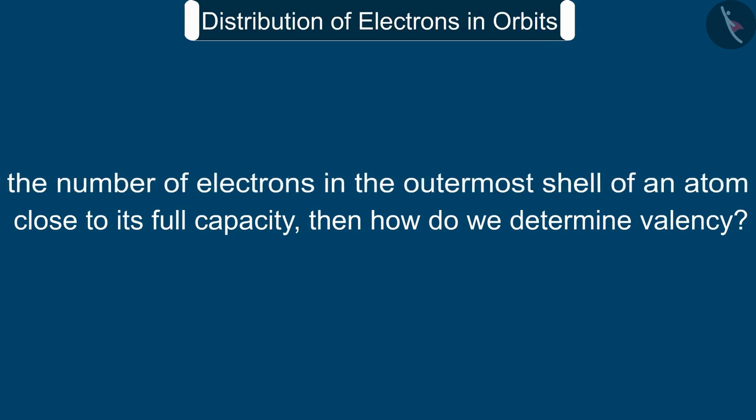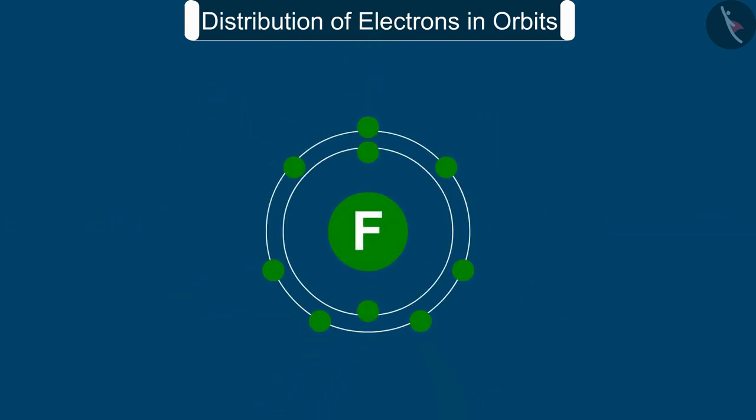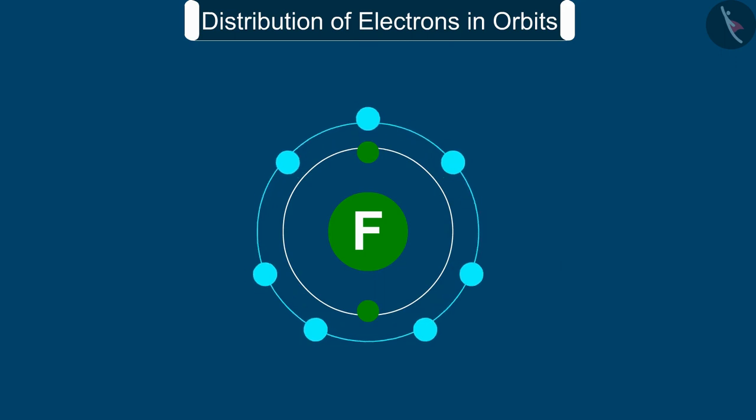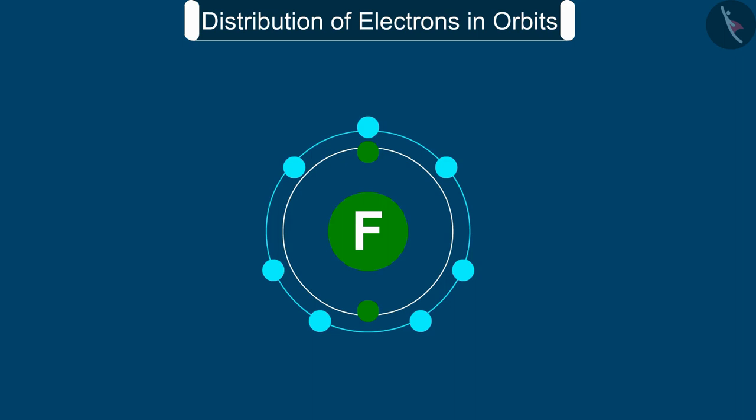For example, the fluorine atom has seven electrons in the outermost shell and its valency could be seven, but it is easier for fluorine to gain one electron instead of losing seven electrons.